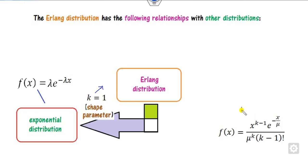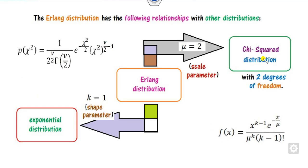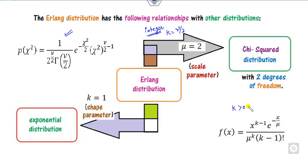If you set Mu=2 in the PDF, this becomes the chi-squared distribution. You can compare: E raised to power X/2, where the exponent X corresponds to K minus 1. Since K is always an integer, the degree of freedom Nu must be an even number — 2, 4, and so on. So the exponential distribution is one particular case of the Erlang distribution, corresponding to K=1.